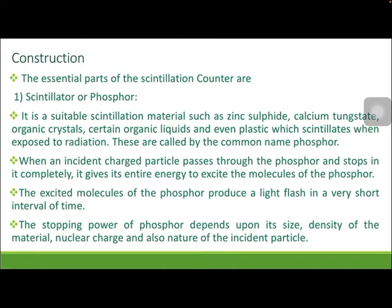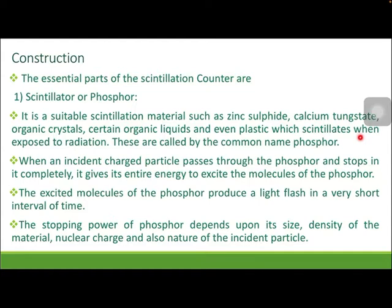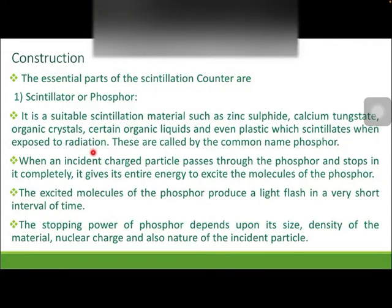In the construction of this scintillation counter, there are three essential parts. The first one is the scintillator, which is nothing but a phosphor material. It is a suitable scintillation material such as zinc sulfide, calcium tungstate, organic crystals, certain organic liquids, and even plastics which scintillate — meaning they emit light when exposed to radiation, whether alpha, beta, or gamma radiation. These are called by the common name phosphor.